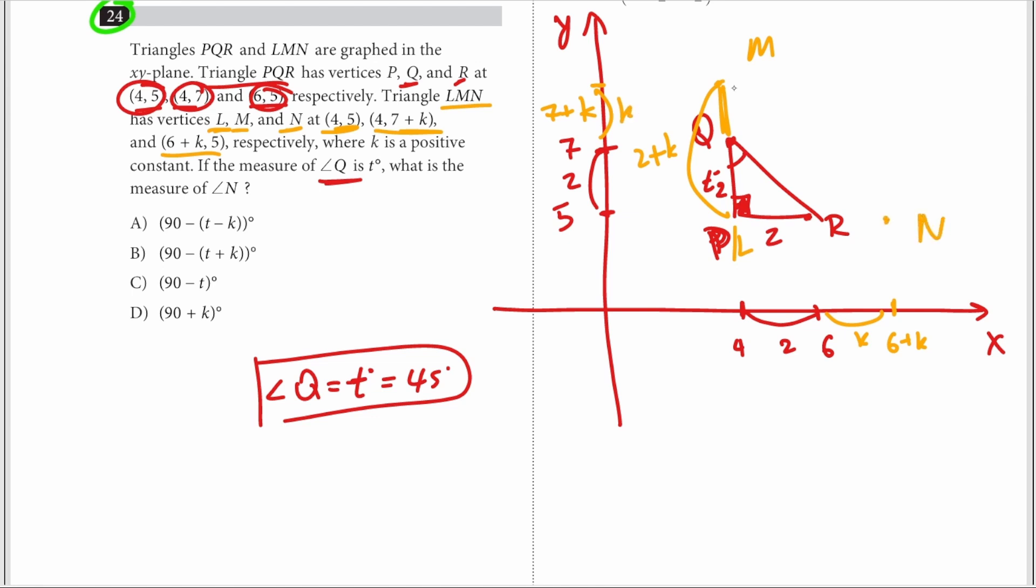If you have to draw this triangle, now this side is also going to be equal to 2 plus k, because this is k, so 2 plus k. So guess what? Triangle LMN is also an isosceles right triangle.